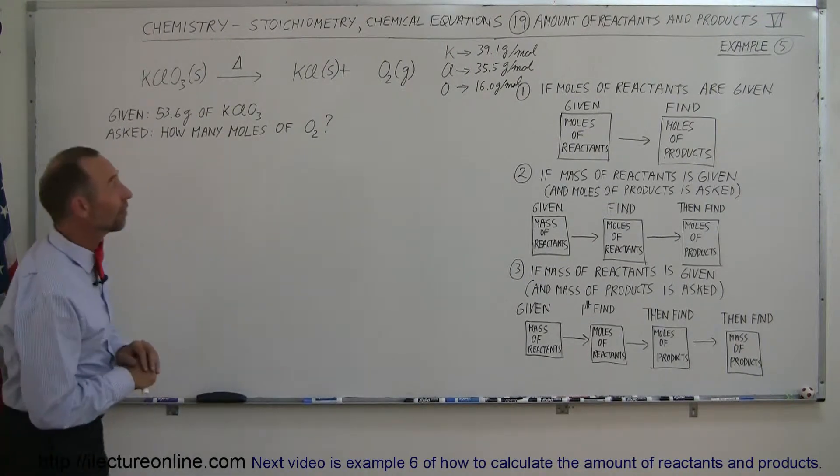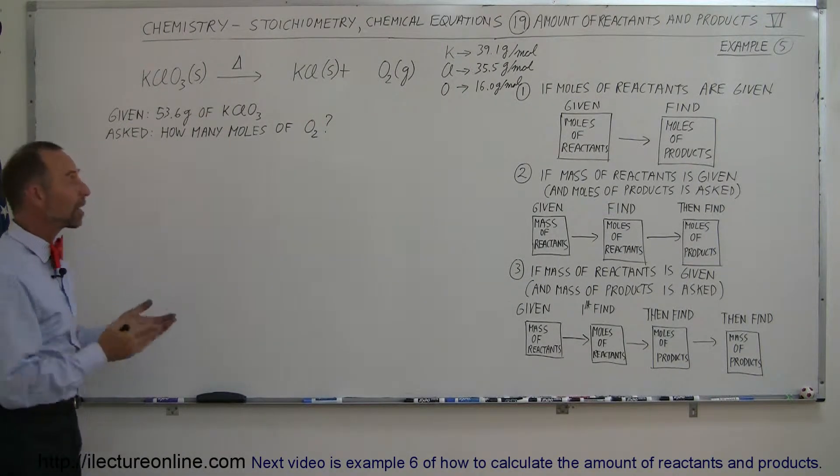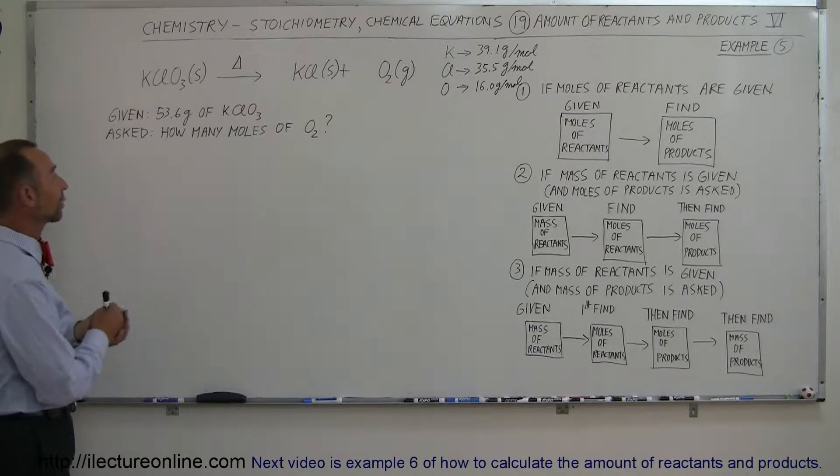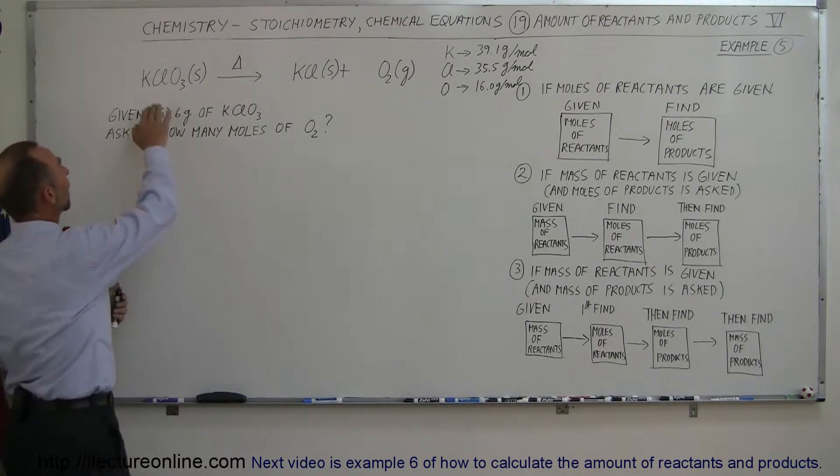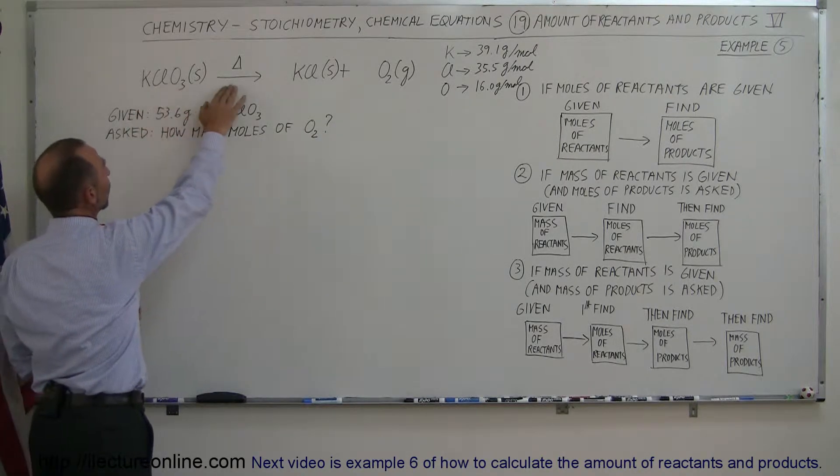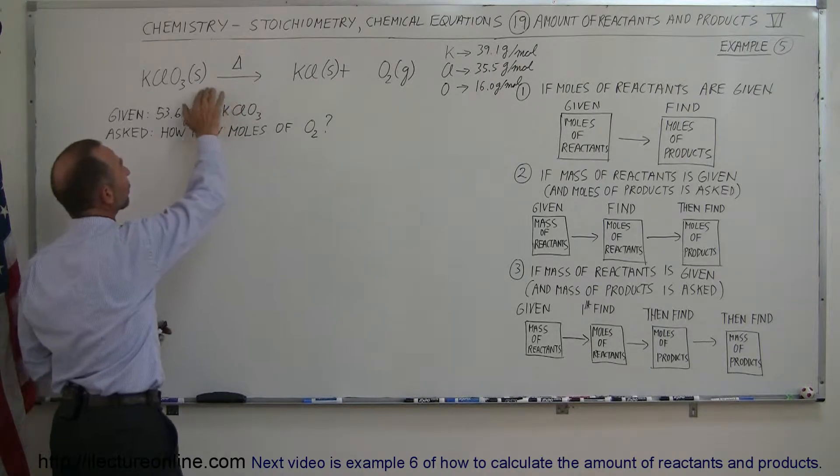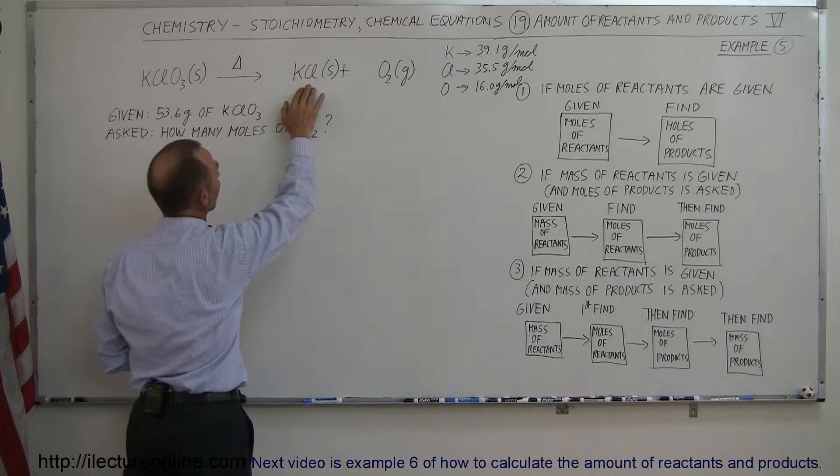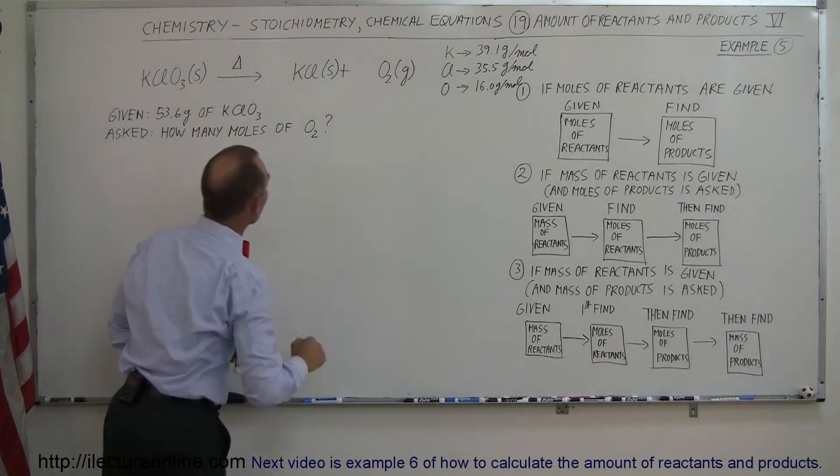Here's our next example of how to find the amount of product when you're given the amount of reactants. In this case, we have potassium chlorate, which with a little help and some heat will convert, react, to form potassium chloride and oxygen gas.